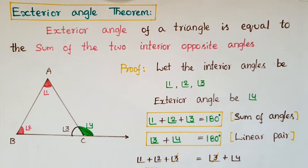Hello everyone, today I am going to tell about the exterior angle theorem. We know that if we produce each side of a triangle, an exterior angle will be formed. In this theorem we have to prove that an exterior angle is equal to the sum of the two interior opposite angles.